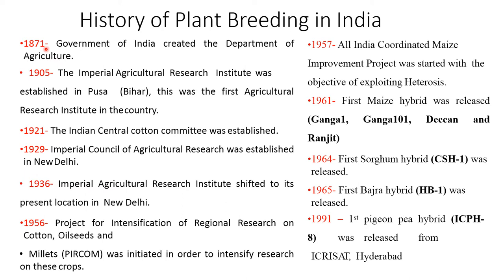The first maize hybrid was released in India in 1961. The Indian Central Cotton Committee was established in 1921. The Imperial Agricultural Research Institute was established in Pusa, Bihar — it was the first agricultural research institute in our country — and later shifted to its present location in New Delhi.